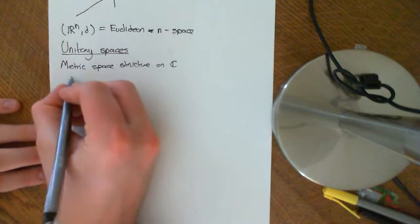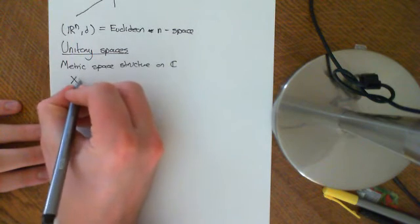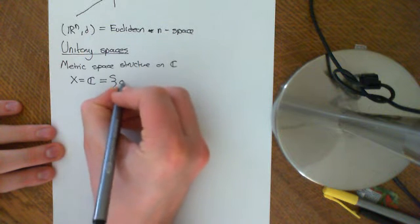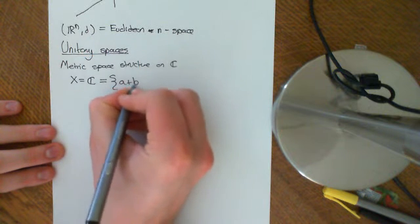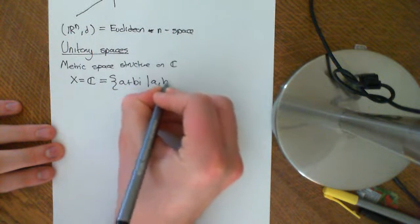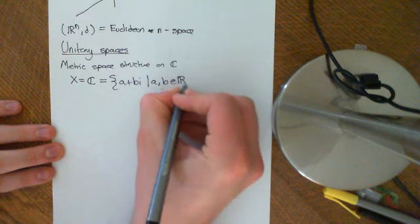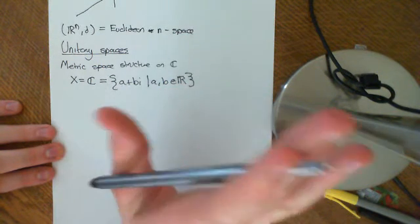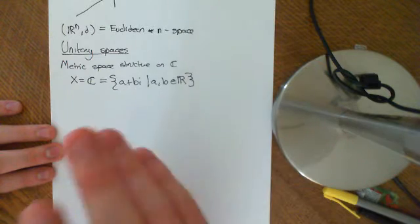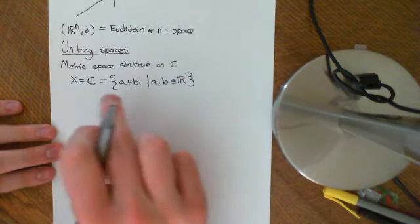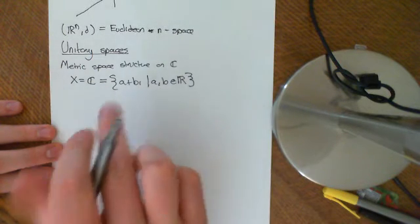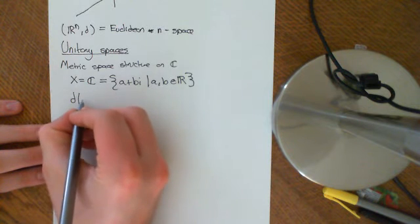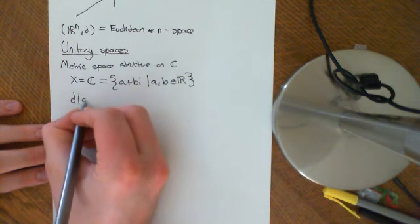We take as our abstract set the set of all complex numbers, which is the set {A + Bi} where A and B are elements of the real numbers. At the moment, I don't care about the beautiful algebraic properties of the complex numbers — all I care about is that it is a set. Now I can define the concept of a distance between two complex numbers.